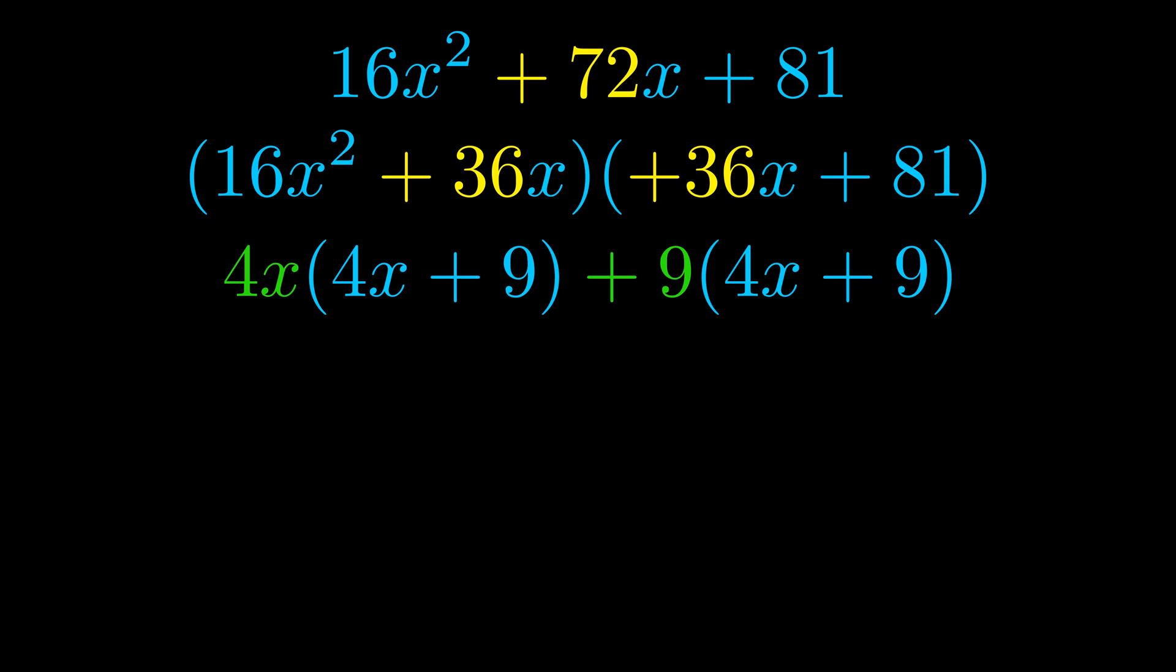Notice also how what remains inside of the parentheses is the same in both cases. The blue values are the same. Those blue values will become one of our factors and we will combine the two green values, the GCFs that we pulled out, to get the other one. And that is our fully factored equation.